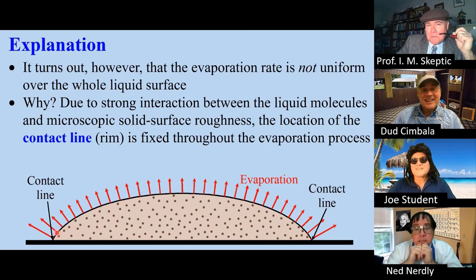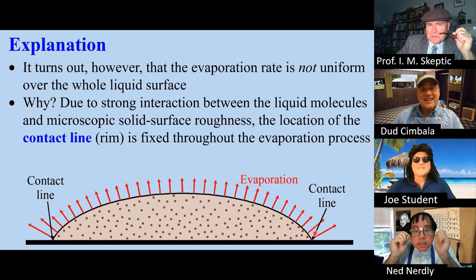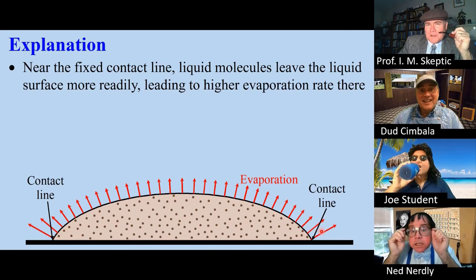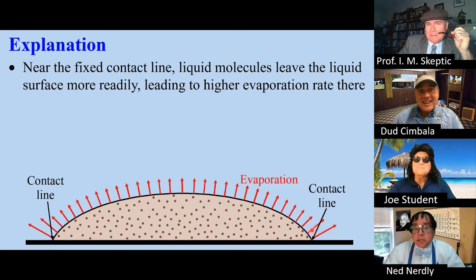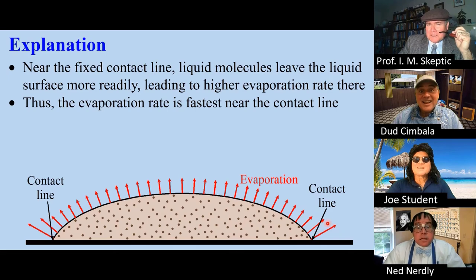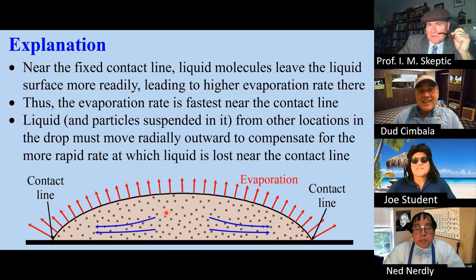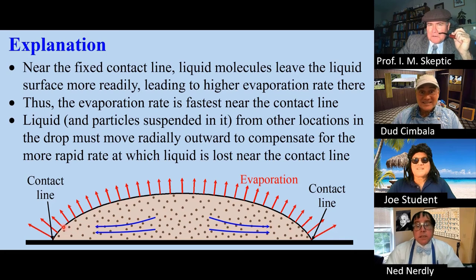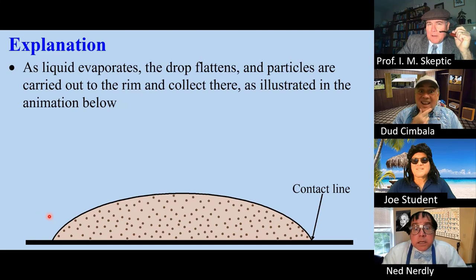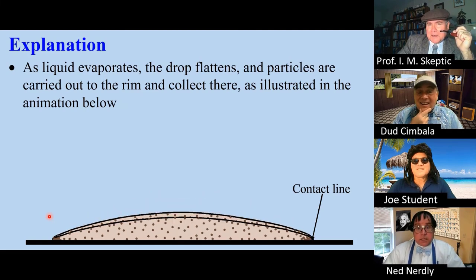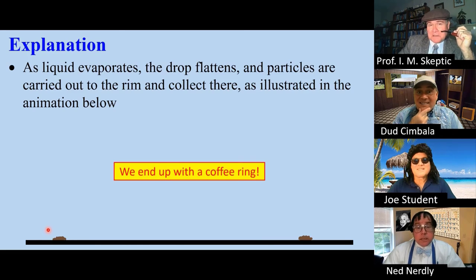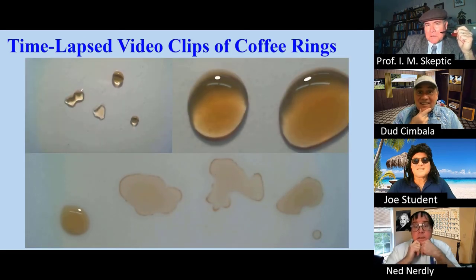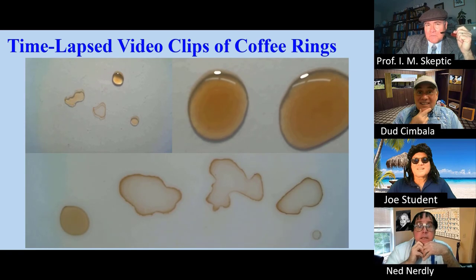The evaporation rate is thus fastest near these contact lines. Therefore, liquid and the particles in it must move radially outward and make up for the liquid lost by evaporation at this contact line. As the liquid evaporates, the drop flattens, and the particles collect near the rim. As illustrated in this animation, in the end we have a coffee ring. Here are some time-lapsed video clips of coffee rings as they form.